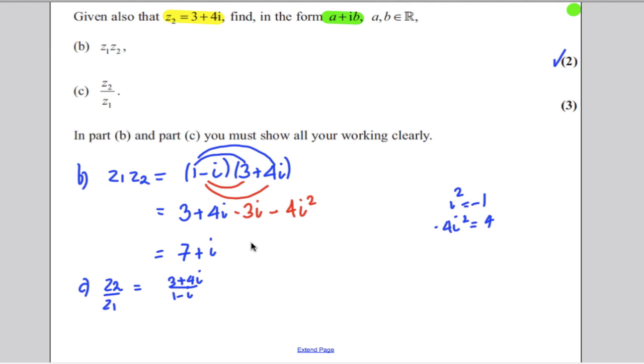You should remember when doing a division of complex numbers, it's sort of equivalent in real numbers to rationalizing surds. We always multiply the top and bottom of the fraction by the complex conjugate of the denominator. So we're going to multiply by 1 plus i, and we're going to multiply by 1 plus i.